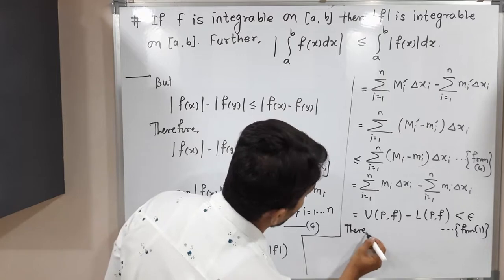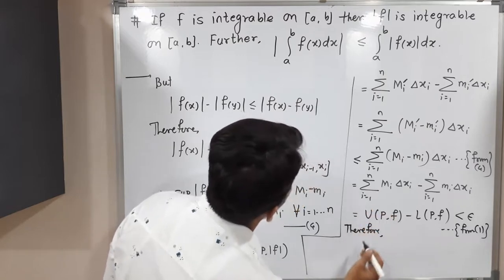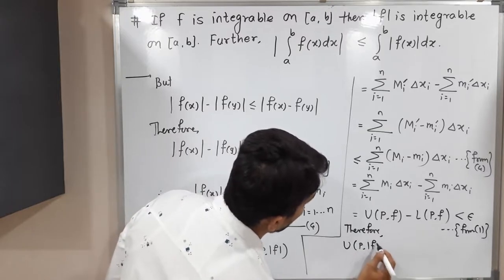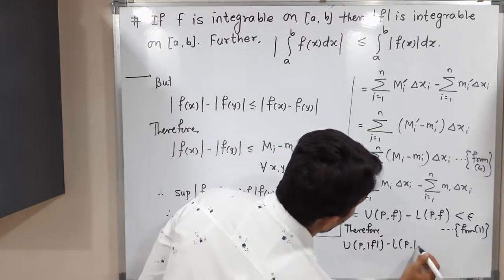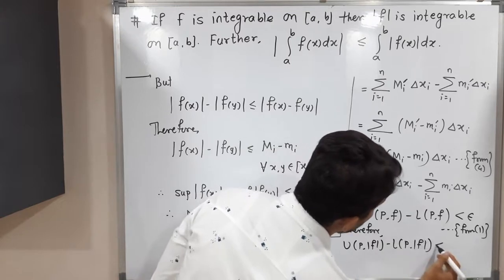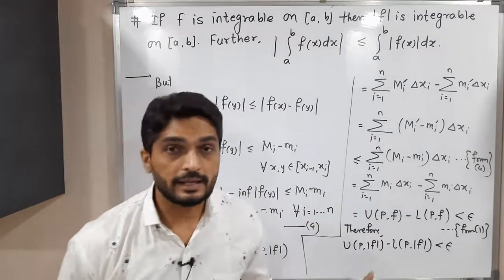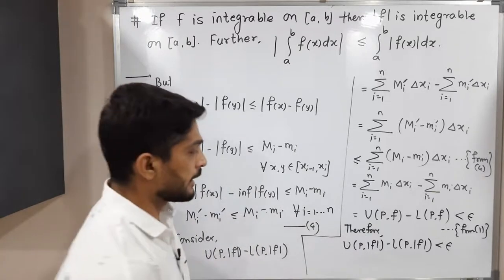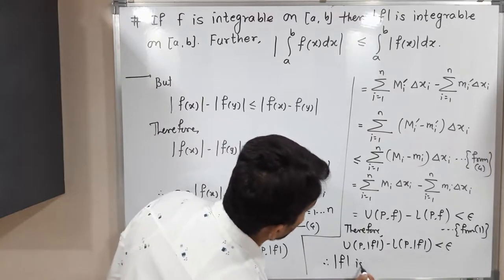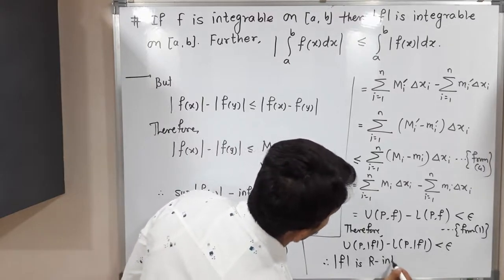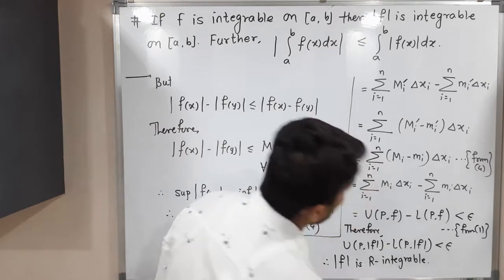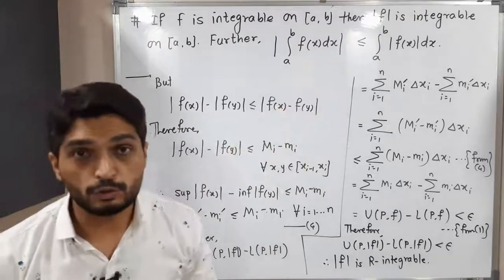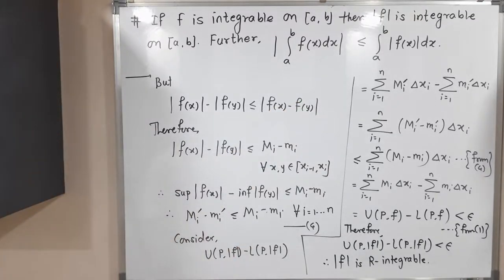Therefore, U(P, |f|) − L(P, |f|) < ε. By the Riemann criterion, that criterion is satisfied, so we can declare that |f| is also Riemann integrable. Therefore, |f| is Riemann integrable. In this way we proved it. But there is one more sub-question — we have to prove the inequality |∫ₐᵇ f dx| ≤ ∫ₐᵇ |f| dx. Make a screenshot of it and we will go further.